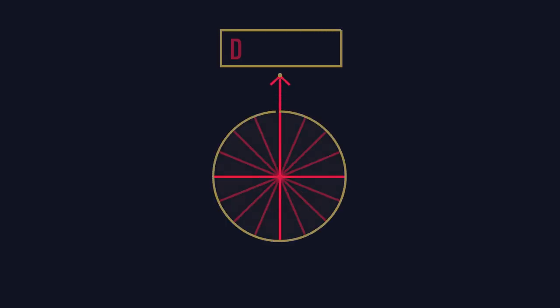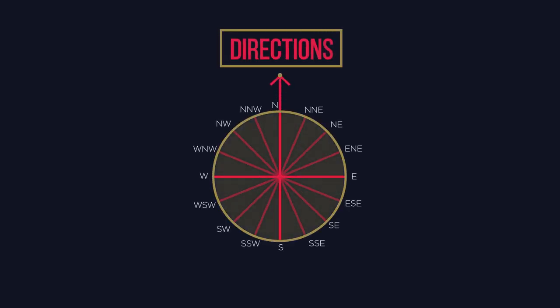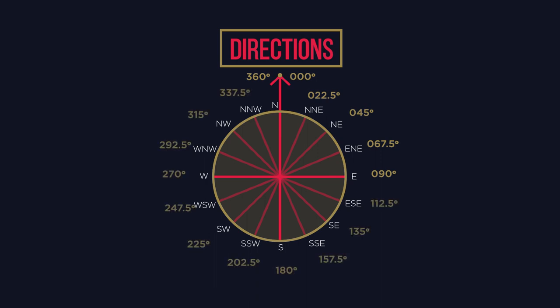Bearings are used to describe directions. They are measured clockwise from north, with north taking the value of 000 degrees and 360 degrees. If an angle is less than 100 degrees, we add an extra zero or two so that it is three digits.